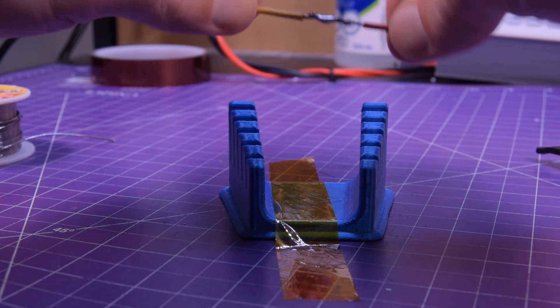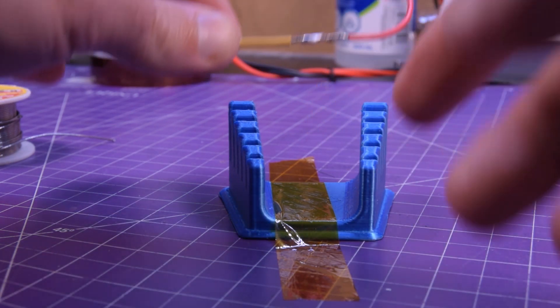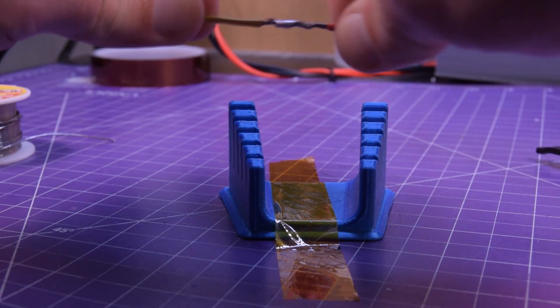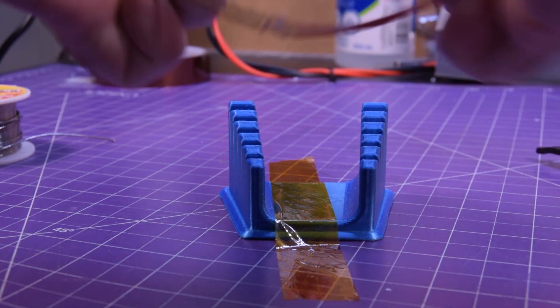That is a solder joint. A bit too much solder. Typically I would have a bigger tip and go, you know, kind of sweep it around. But that still does the job.